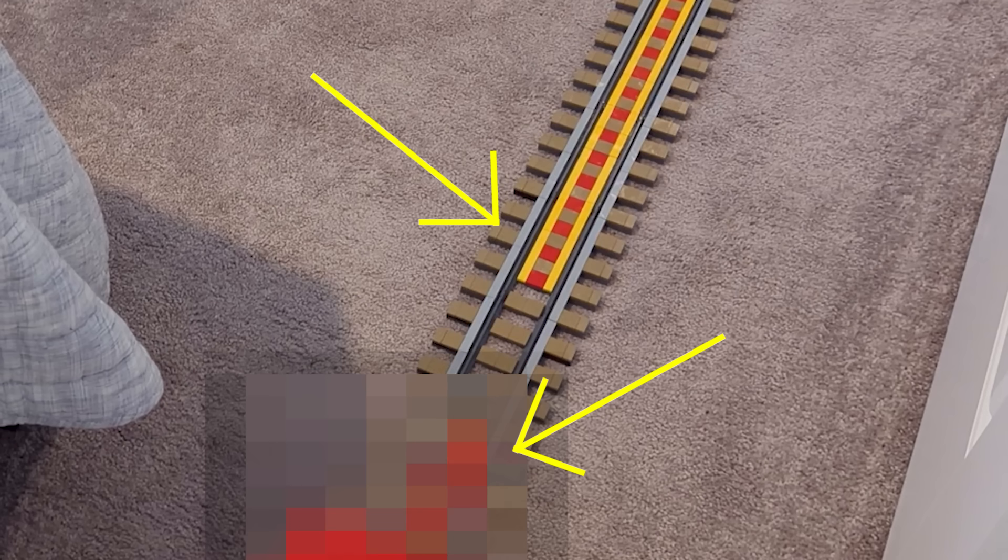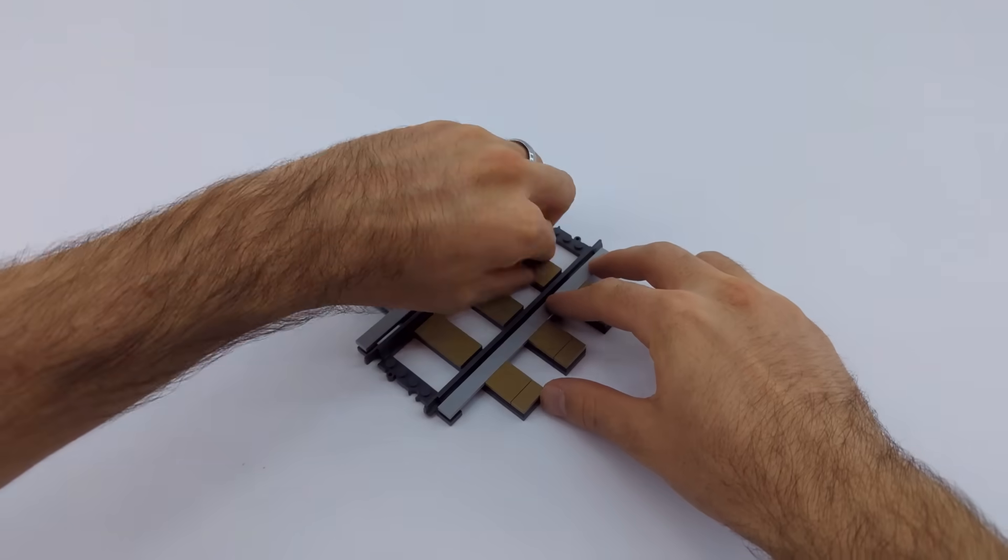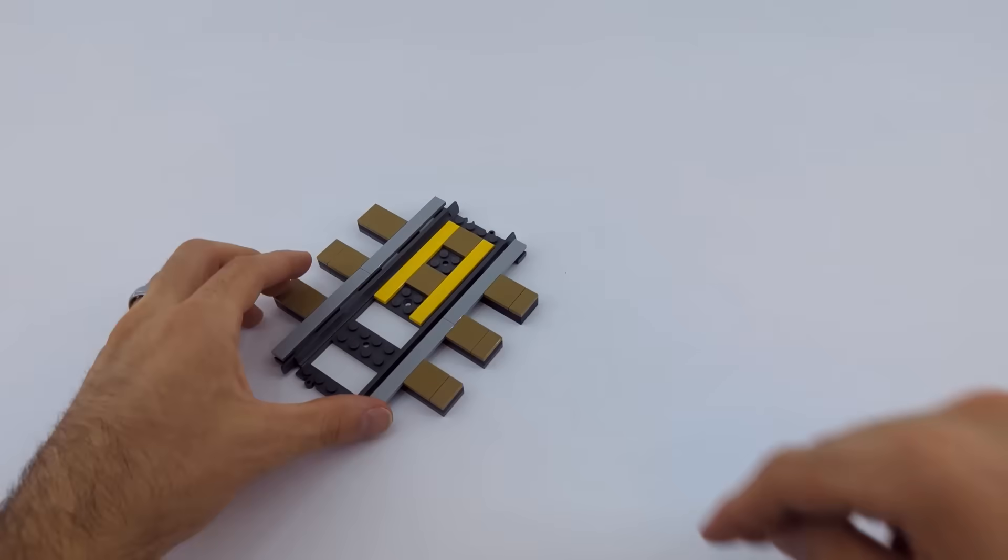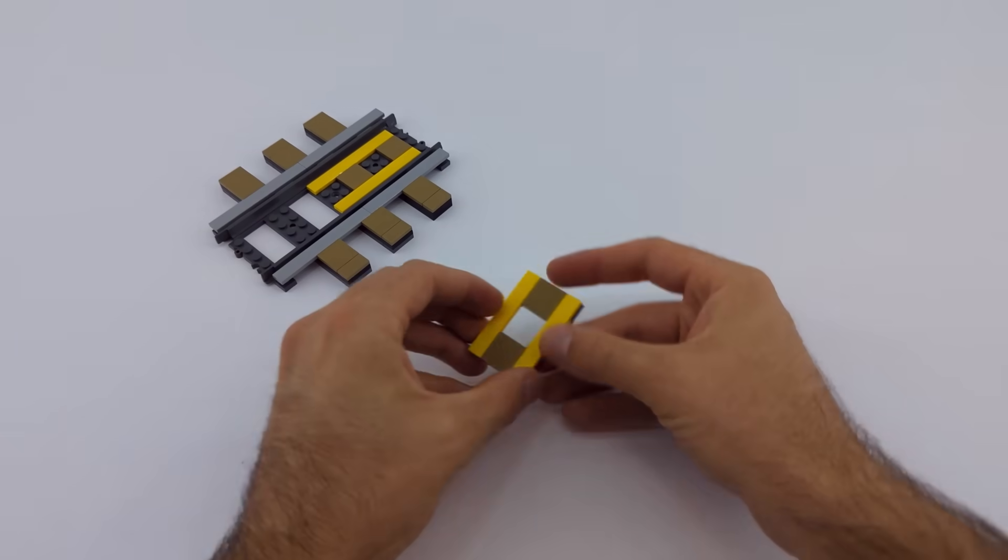Of course the powered rail and the special rail are just modified versions of this rail. I will remove the dark tan tiles from the center and replace them with yellow tiles that run the length of the rail and red and dark tan tiles down the middle.